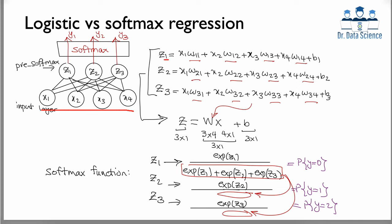For z1, all the first indices are equal to one, and the second index denotes the feature number; similarly for z2, all first indices are two. This allows us to write everything as a matrix multiplication, which is key to the efficiency of neural networks and GPU usage. We have a weight matrix W of size 3×4, an input vector x of size 4×1, and three bias terms, giving an output z of size 3×1.